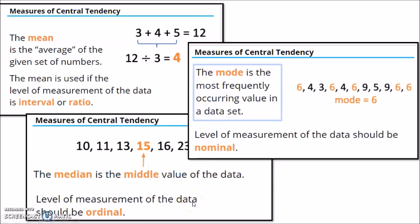So another measure of central tendency is the mode. The mode is the most frequently occurring value in a data set. So how many times does it appear? The one with the most, that's the mode.